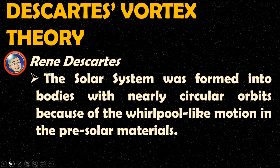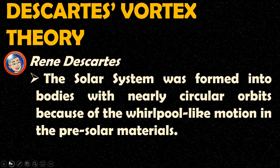What are your observations about all the hypotheses and theories presented? Isn't it that in all of them, the basis of the formation of the solar system is based on circular motion? French mathematician and physicist René Descartes was one of the first proponents of a model of the origin of the solar system. According to his model, the solar system was formed into a vortex sphere with nearly circular orbits because of the whirlpool-like motion in primordial solar materials. He explained that the orbits of the planets are primarily whirlpool motion, and the satellites follow a secondary whirlpool motion.